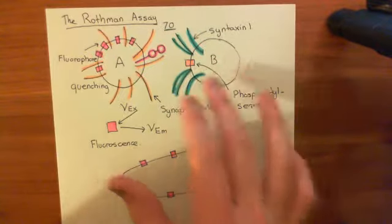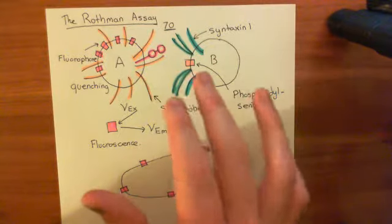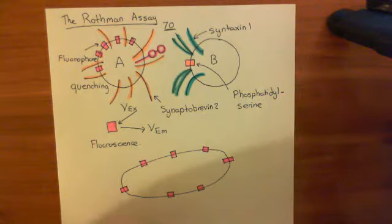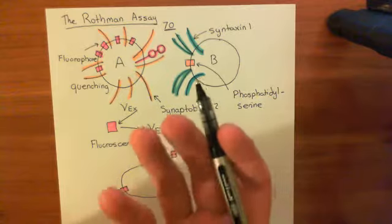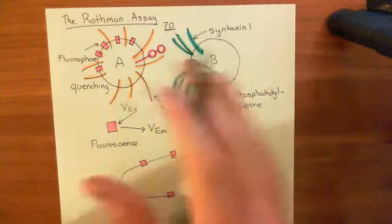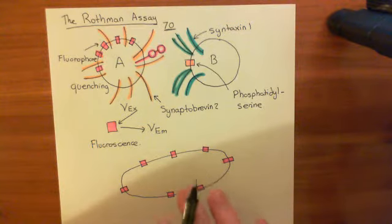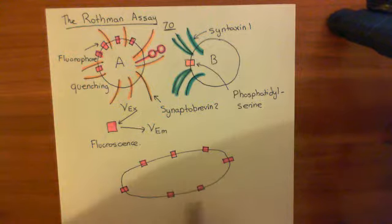And what you get is fusion, basically. You find that these two vesicles fuse, and you see that by looking for the return of the fluorescence that occurs because quenching has been lost, because the density of the fluorophore has gone down in the membrane again.